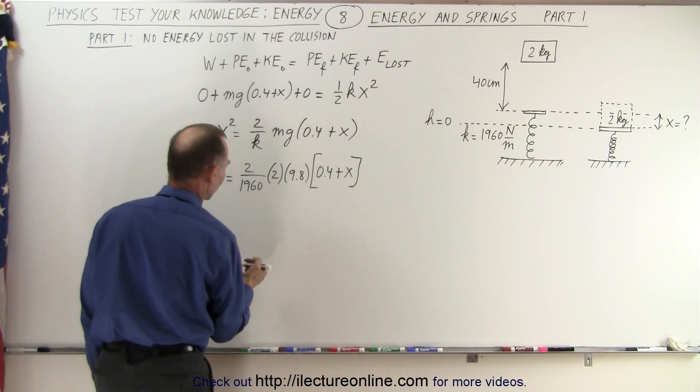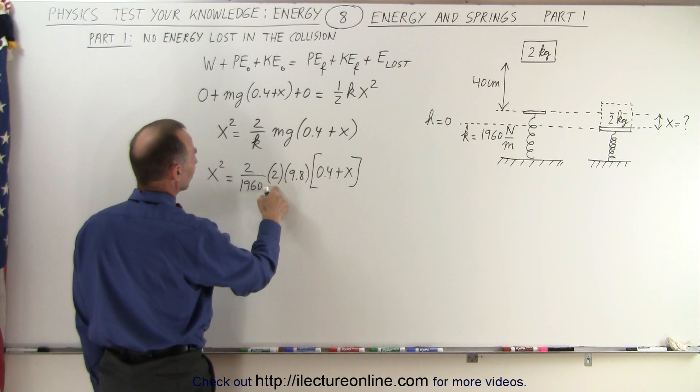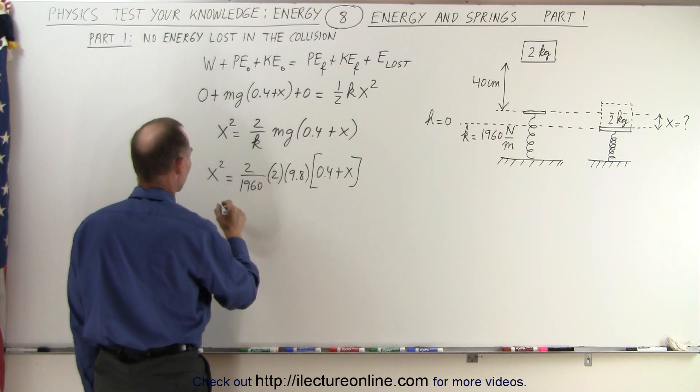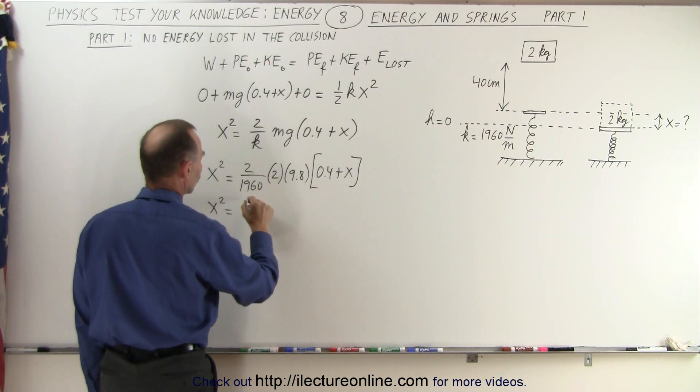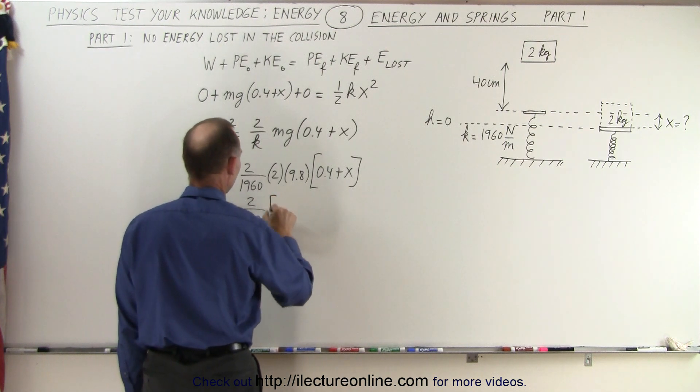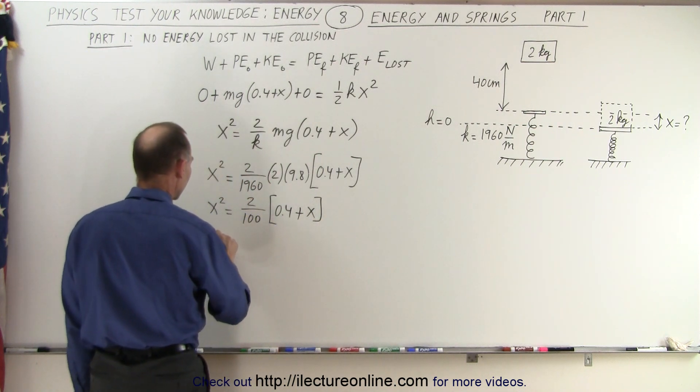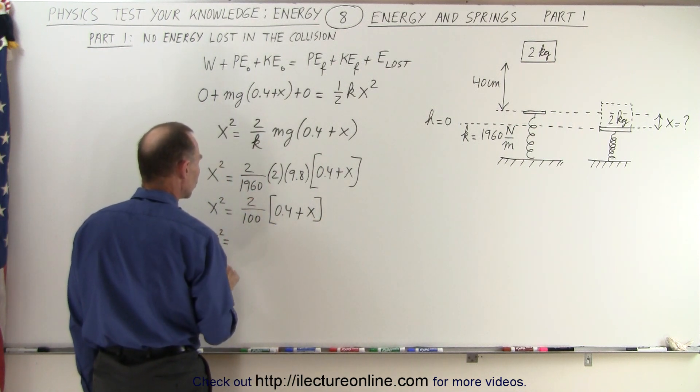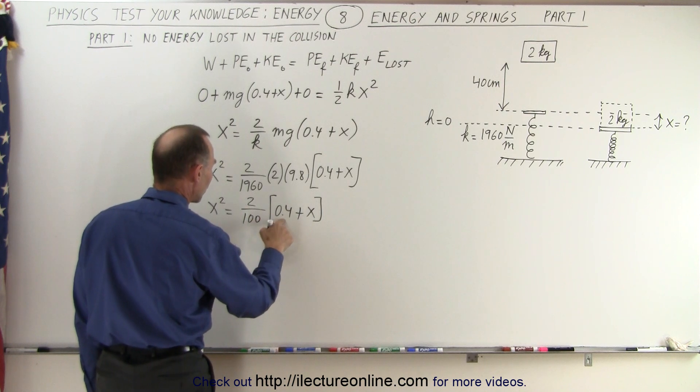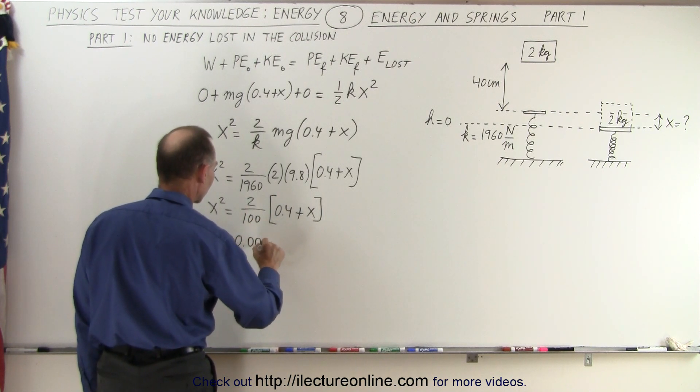All right, so it looks like the numbers are picked quite nicely. So it would be 2 divided by 100. So we have x squared is equal to 2 divided by 100 times 0.4 plus x. That means that we have x squared is equal to, that would be 0.8 divided by 100. That would be 0.0008.